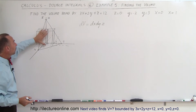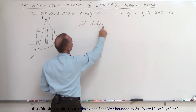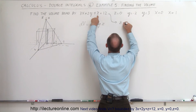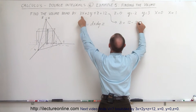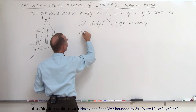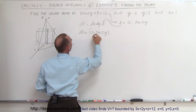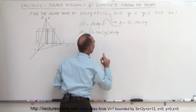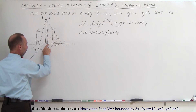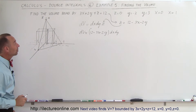The DV is the area of the base (DX times DY) times the height, which goes from the xy-plane up to the plane above. Since z can be expressed in terms of x and y, we write z equals 12 minus 3x minus 2y. So the volume element DV equals (12 minus 3x minus 2y) times DX times DY.